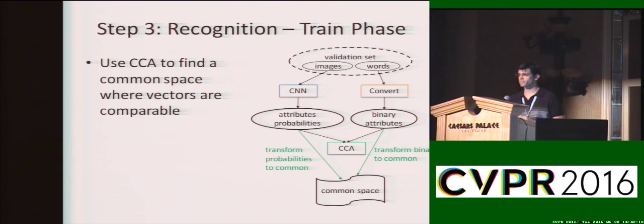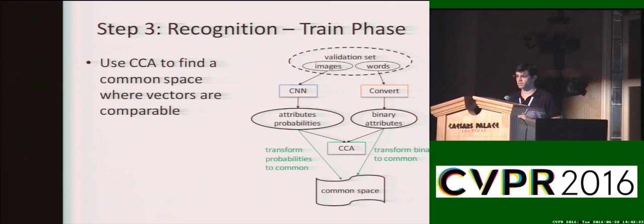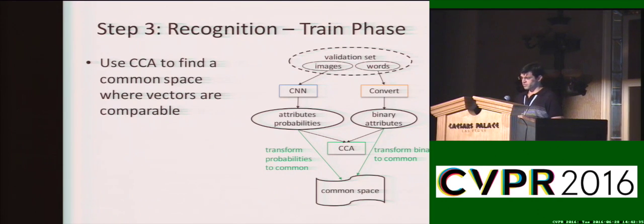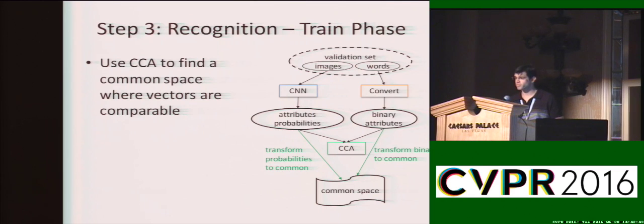Quick recap: in the first step, I've shown you how to convert a word into a binary vector. In the second step, we've shown how to convert an image into a probability vector. In the third step, we need to compare between these two types of vectors. For this, we use Canonical Correlation Analysis, or CCA, to find a common space where these two types of vectors are naturally comparable.